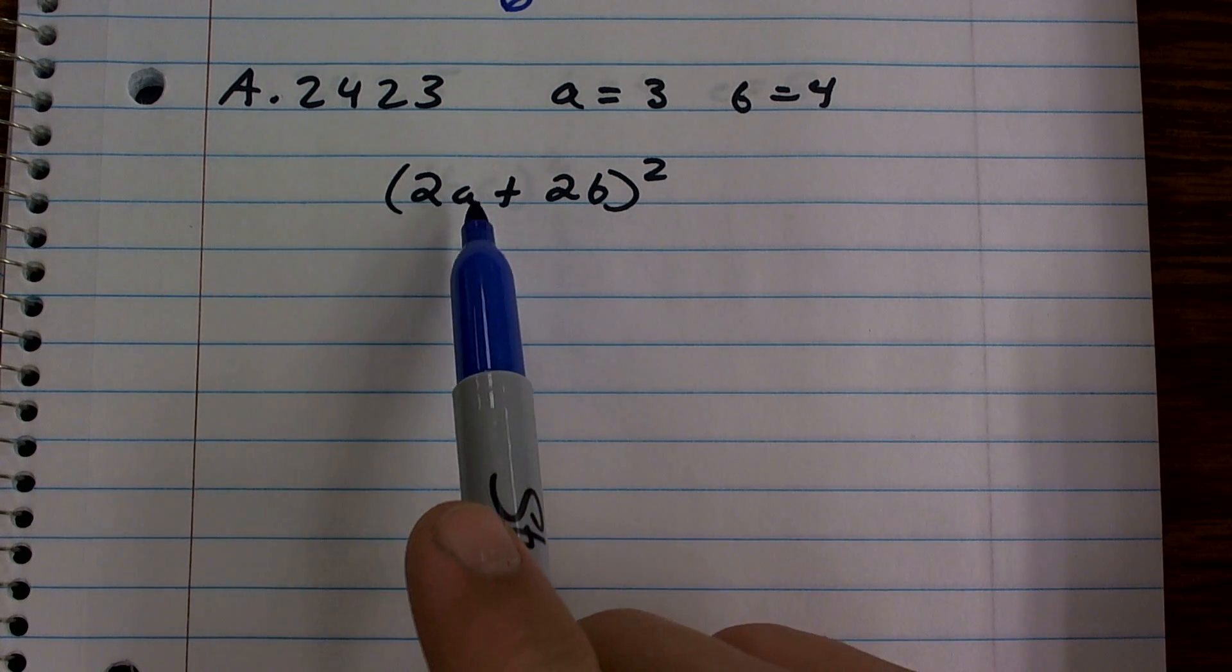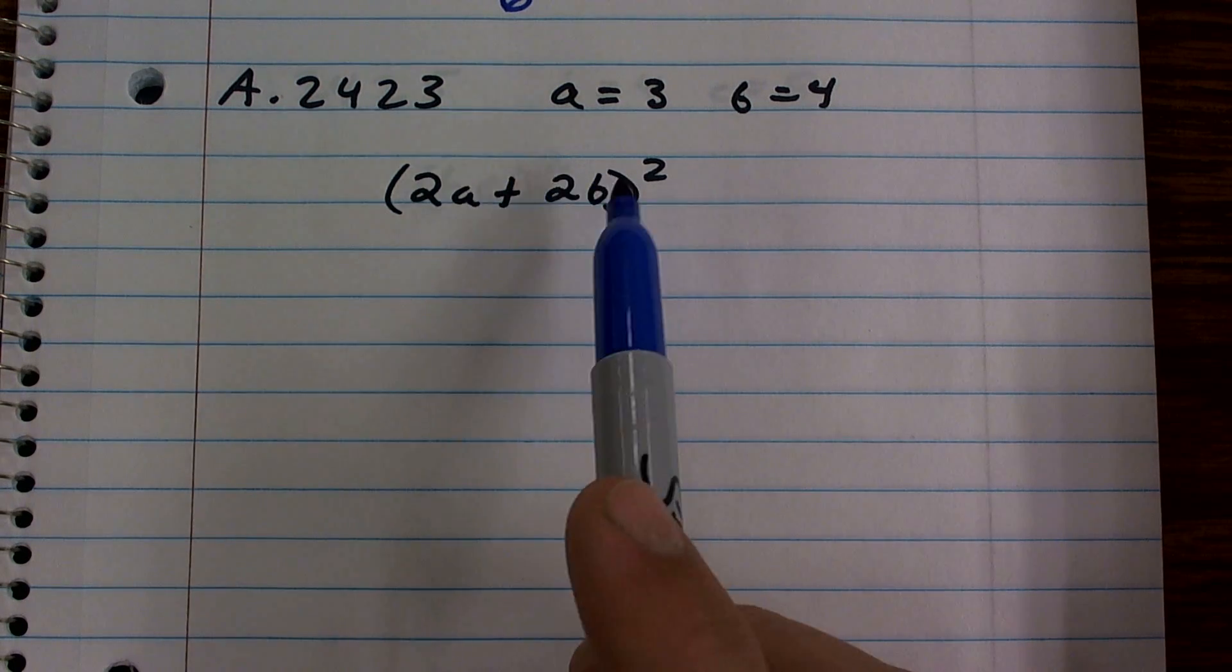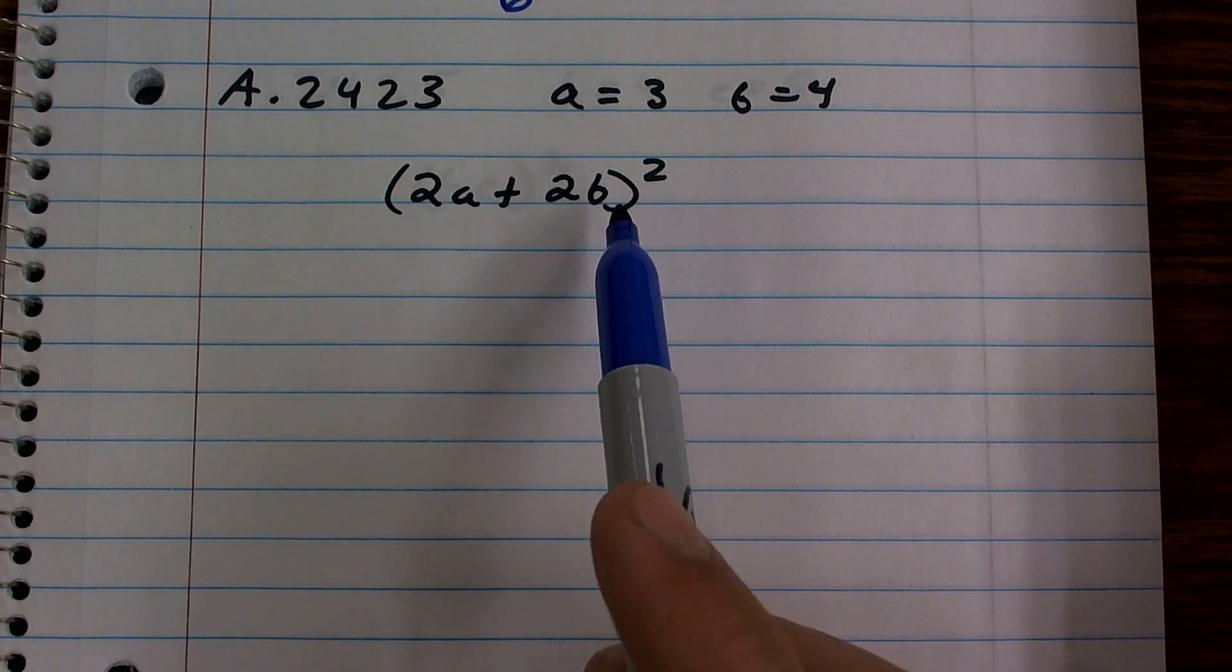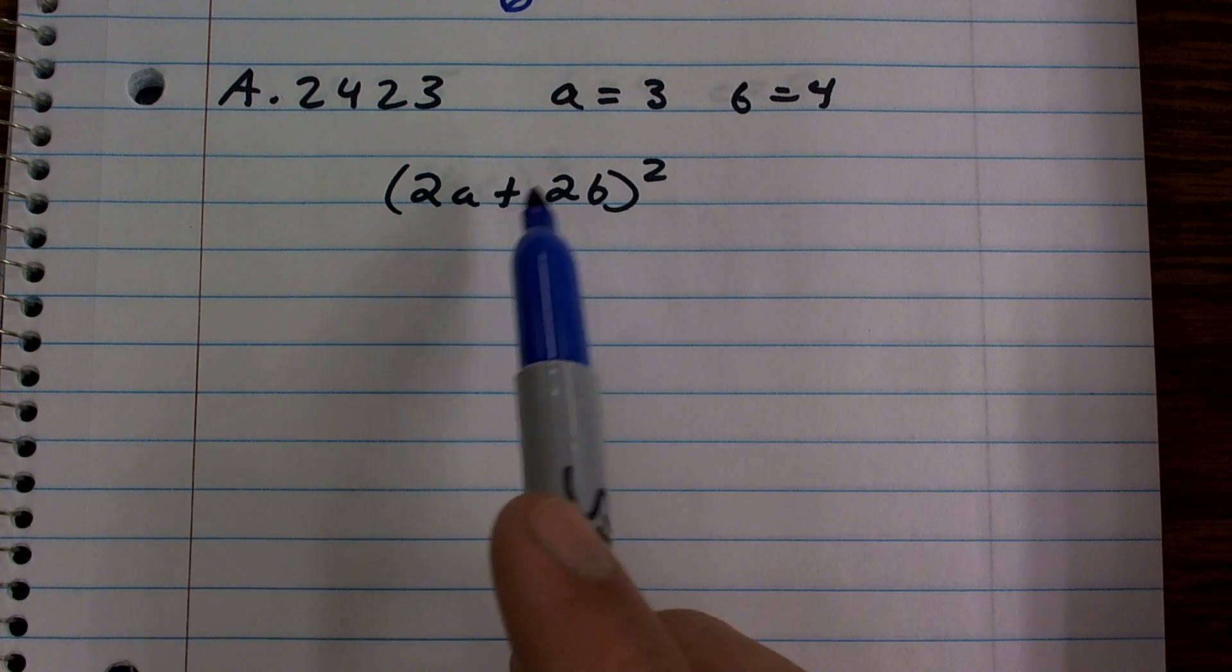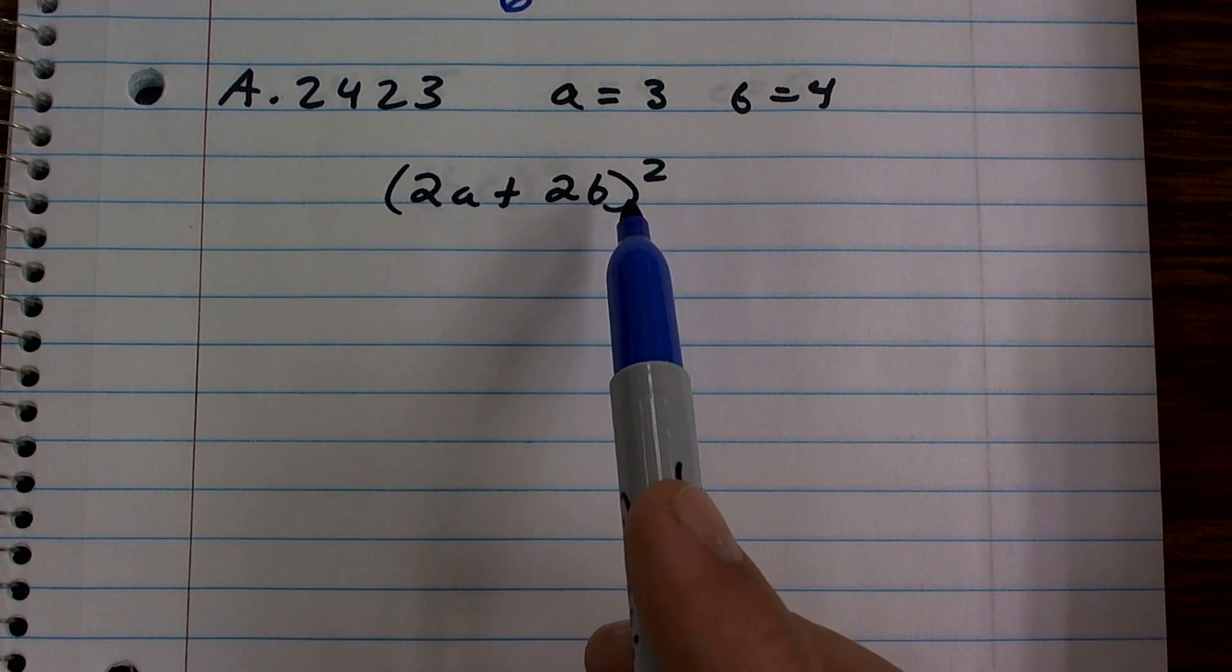We have an expression 2 times the number A plus 2 times the number B squared. So remember, we have two arbitrary values. I do not know the value of A and I do not know the value of B in this algebraic expression.